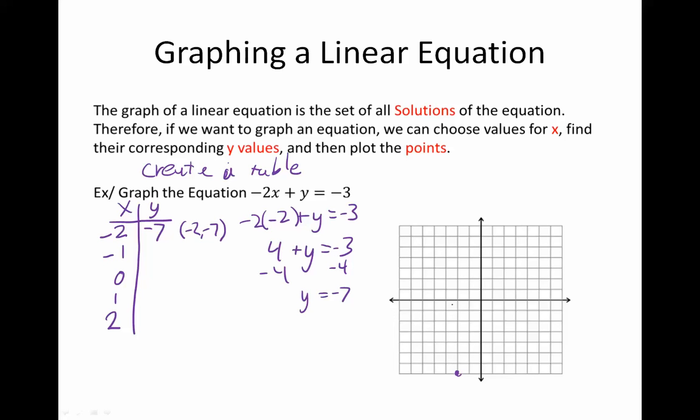(-2, -7) is a solution to this equation, so I plot the point on the graph. We do the same thing for the other values. We have -2 times -1 plus y equals -3. That's 2 plus y equals -3, so I subtract 2 from both sides and I get -5.